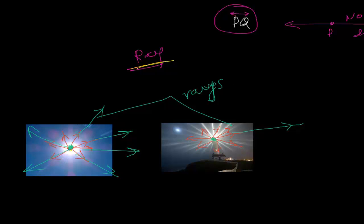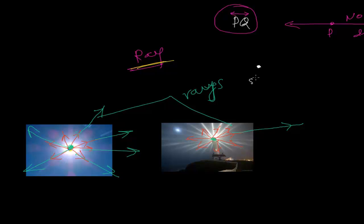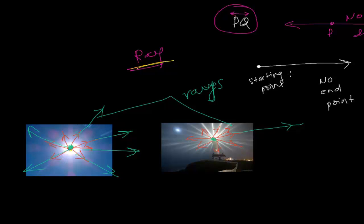This is exactly called a ray. In geometry, a ray is a line that has a starting point but no end point. From the sun, the lights are starting but where they will end we don't know. So the starting point we have, but we don't have the end point — that is called a ray.